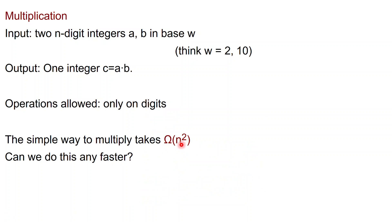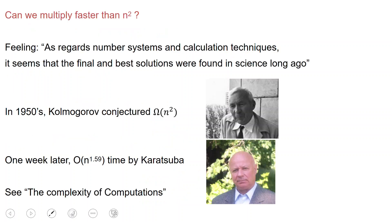This simple way hence takes at least n squared time. Now, can we multiply integers any faster?